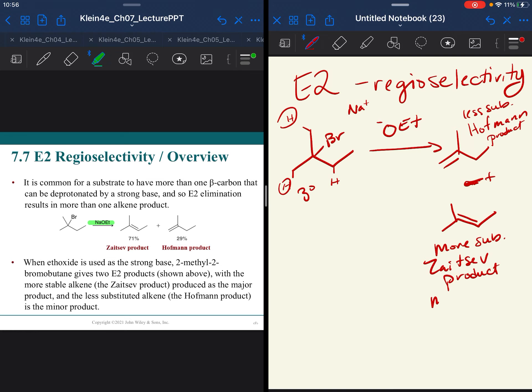So how can we know which one it is? Well, Zaitsev is more stable. So for most bases, the Zaitsev product will dominate. The Zaitsev product will be the major product.